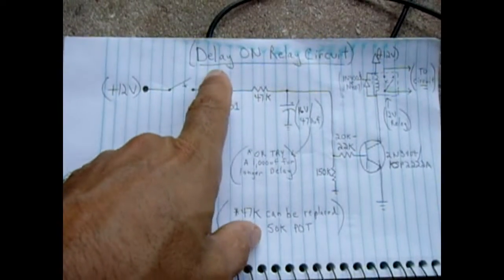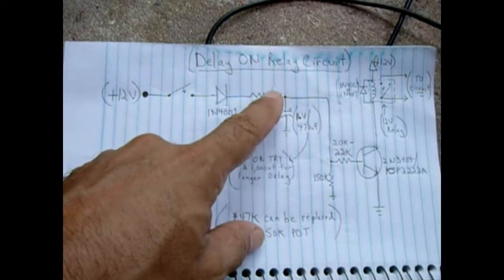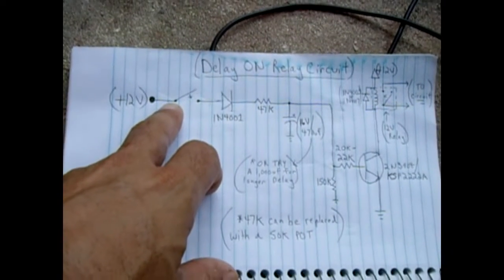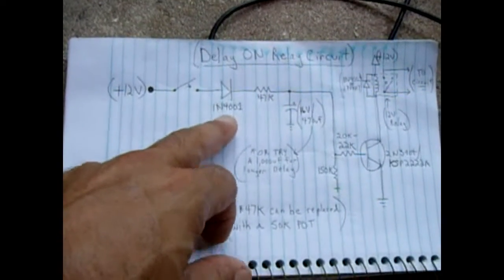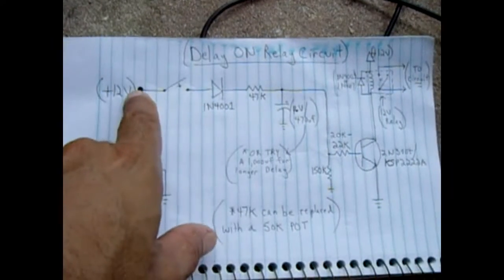Alright, so here's the circuit that I drew up: a delay-on relay circuit. If you have a circuit where you want a light to be delayed before it comes on, this is what you're looking for.